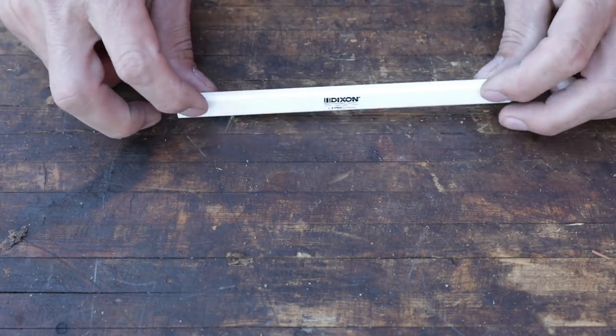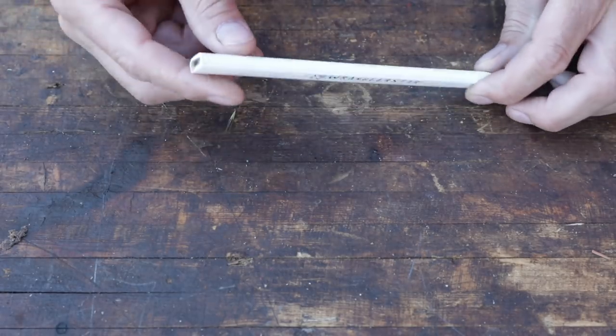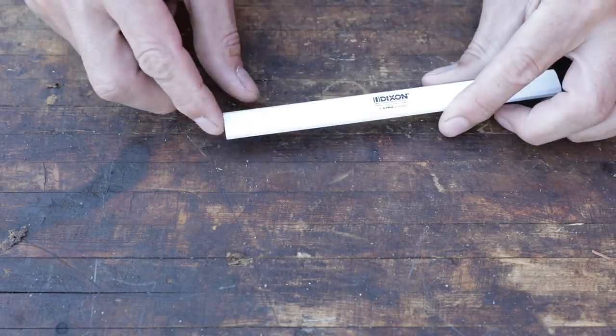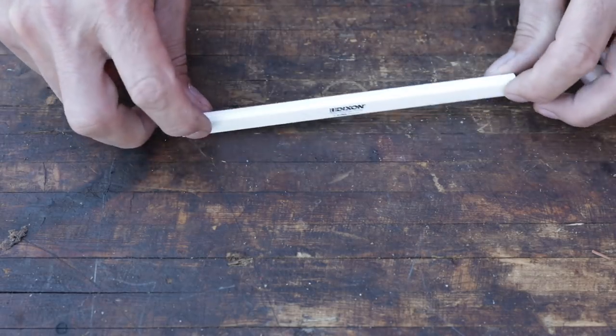And they actually started manufacturing the first carpenter's pencils, and they were actually this kind of shape. They were a piece of graphite that was sandwiched in between wood.